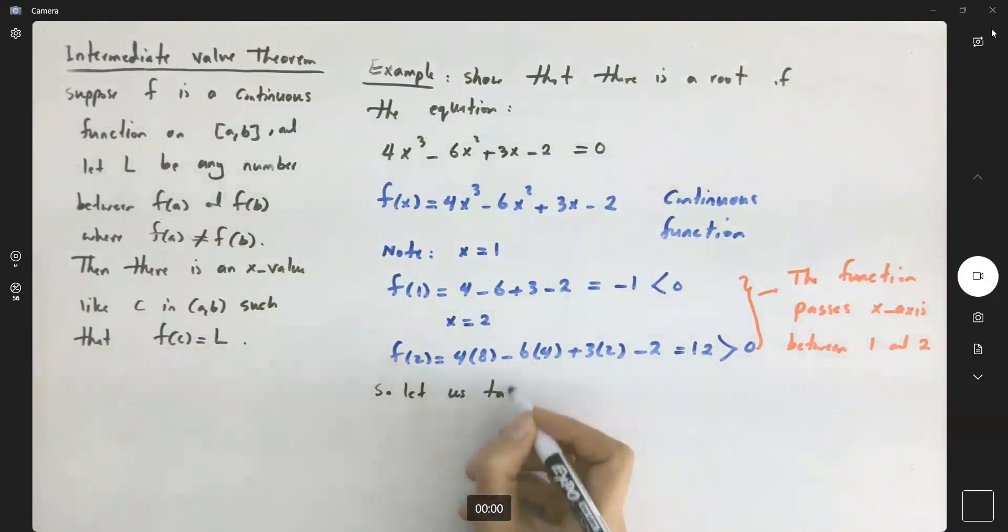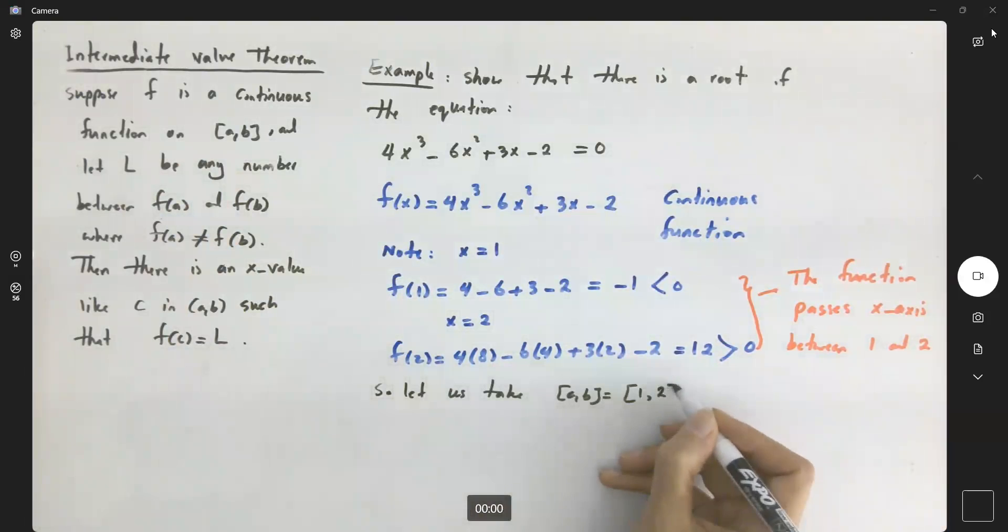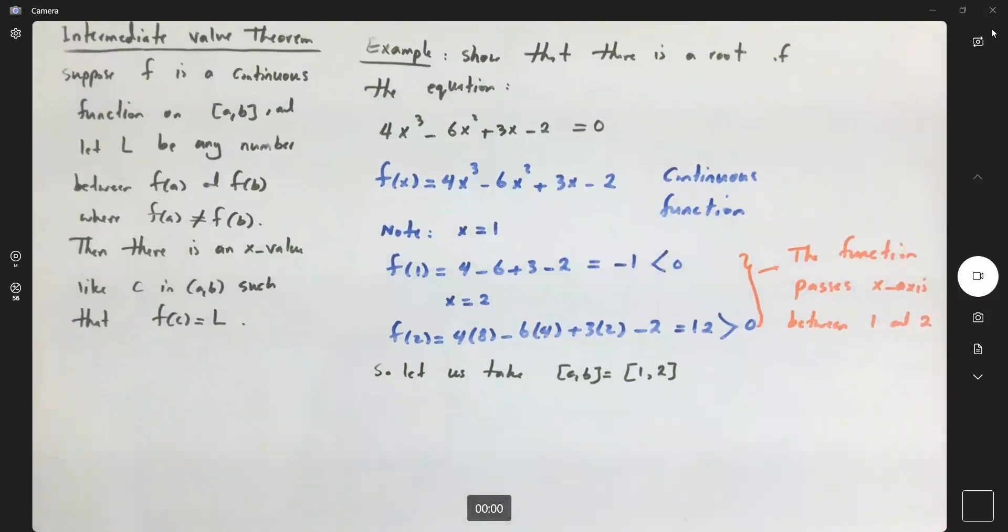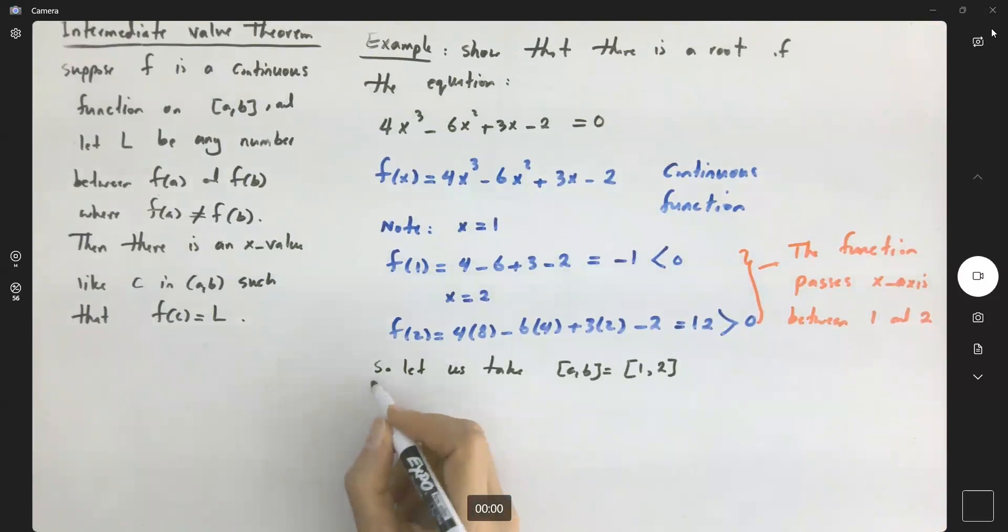So let us take a and b to be the closed interval [1, 2]. We already know that the sign of f(1) and f(2) are different from each other. So the graph definitely passes through the x-axis. The Intermediate Value Theorem assures us.